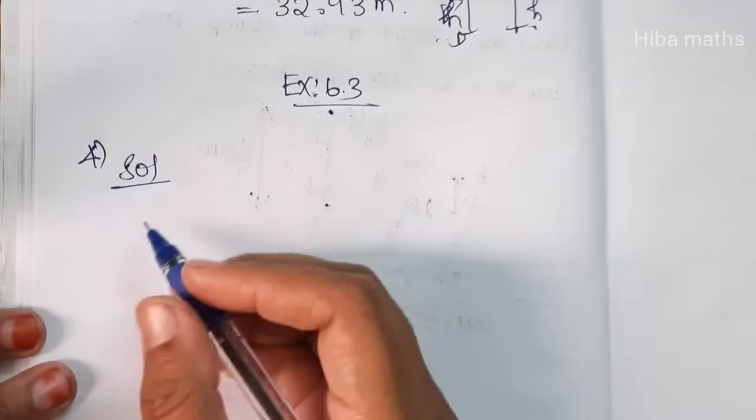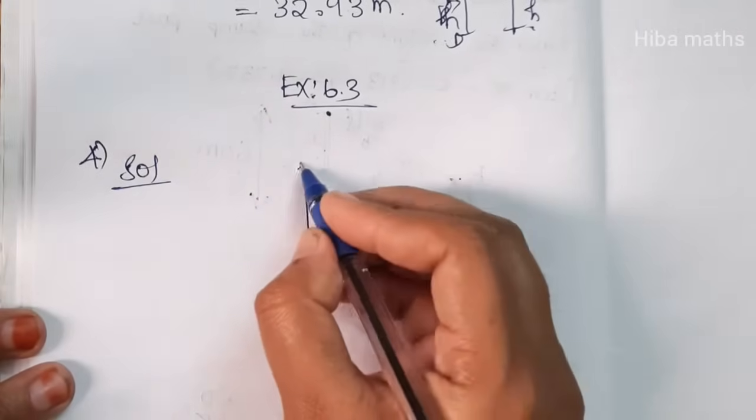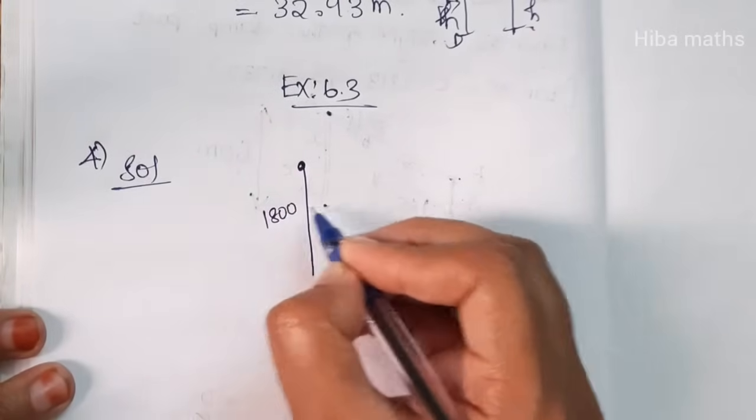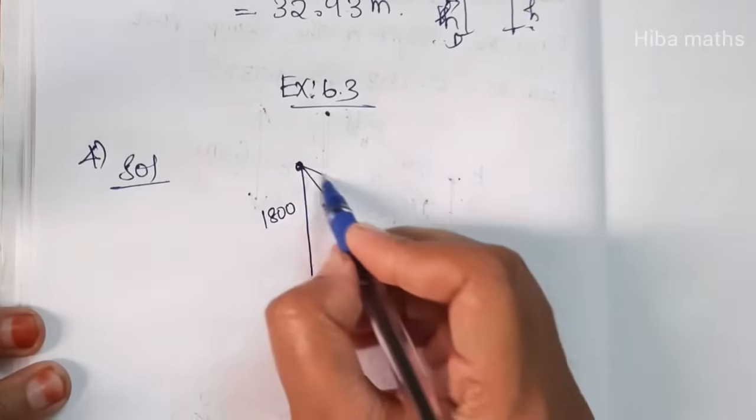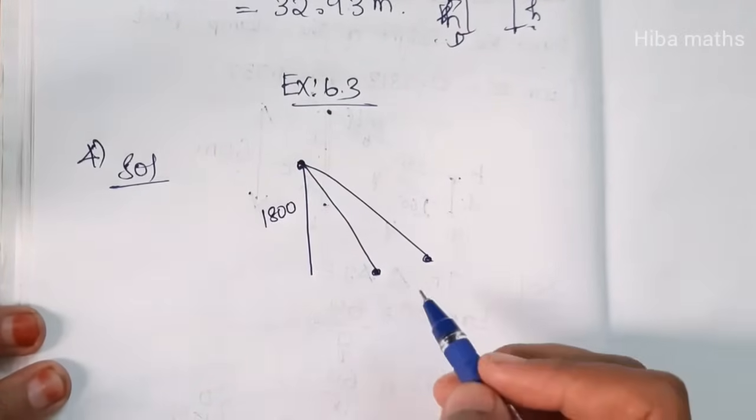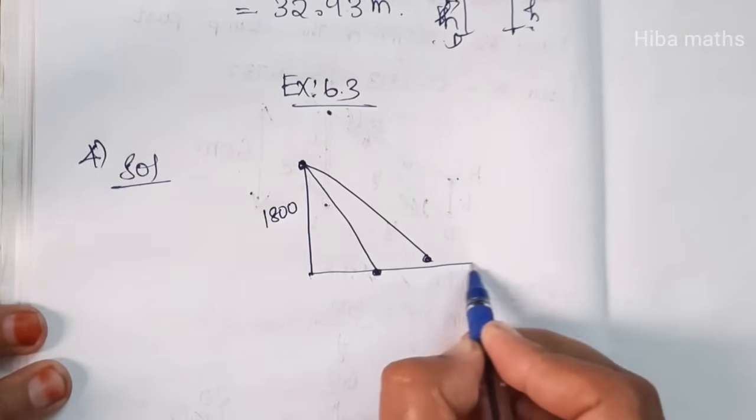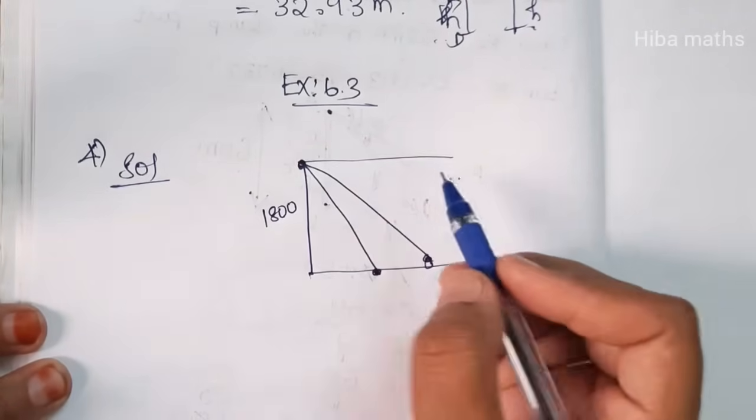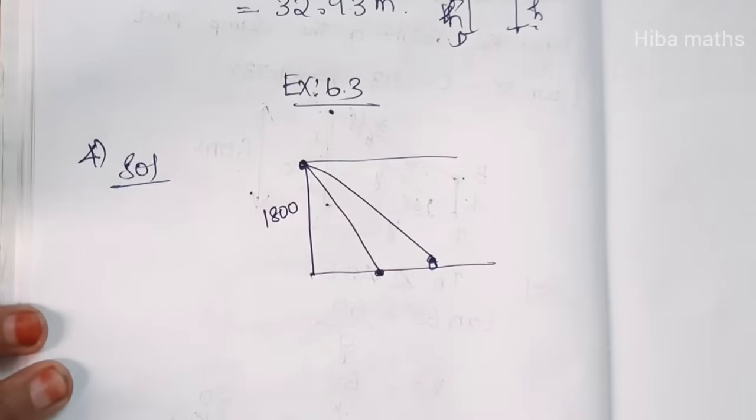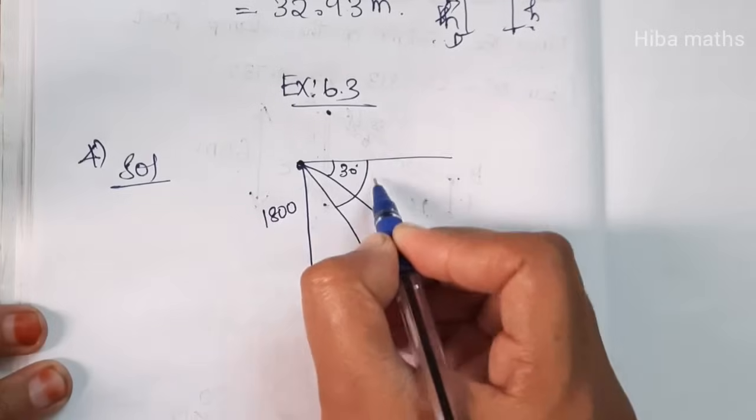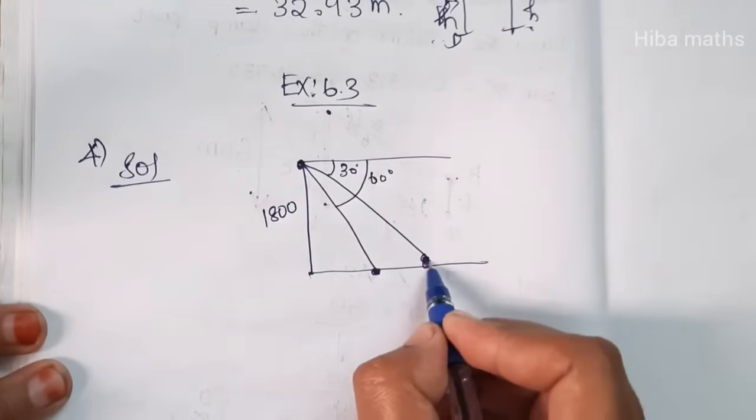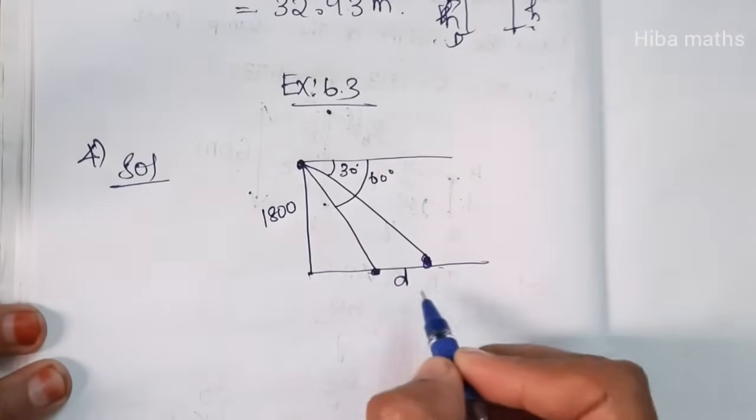This is question 6.3, the fourth question. An aeroplane is 1800 meters high. There are two boats. The first boat has an angle of depression of 30 degrees, and the second boat is 60 degrees. Now we need to find the distance between the two boats.